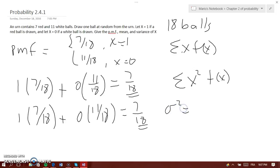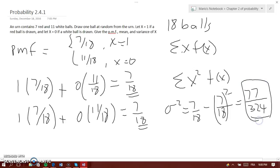Now the variance will be 7 out of 18 minus 7 out of 18 squared. And after all calculations, you would get 77 out of 324. So that will be your variance.